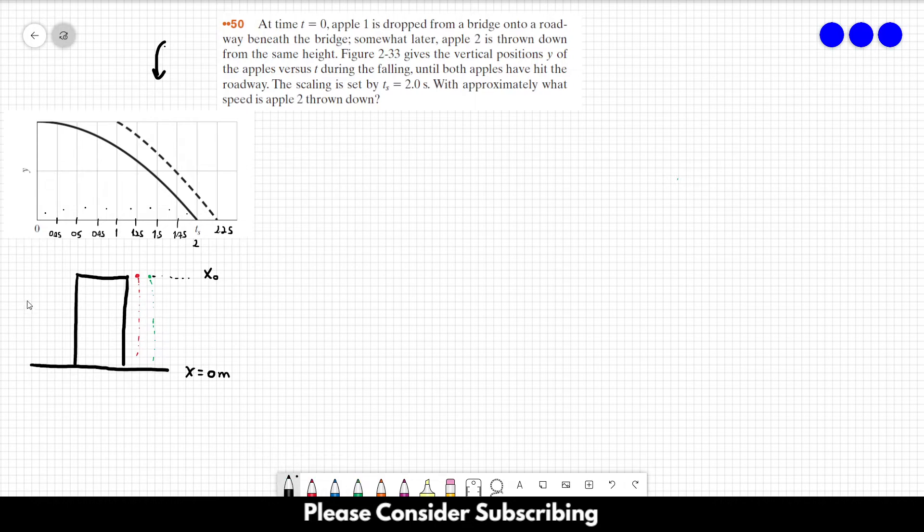The initial position is x0, we don't know the initial position because it's the height of the building, and the final position is 0. Let's say that upwards is positive, so downwards is negative, so the acceleration of gravity is minus 9.8 meters per square second. The initial velocity of the red apple, v1, is 0 because it's dropped. And the initial velocity of the green apple is what we want to know.